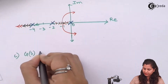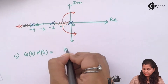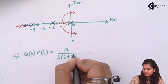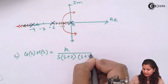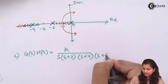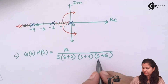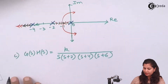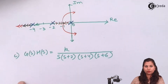Now let's add one more pole. This gives us K upon s(s+2)(s+4)(s+6), so we have added another pole at the location s equals to minus 6. Let's see what are the changes in the location of the root locus.